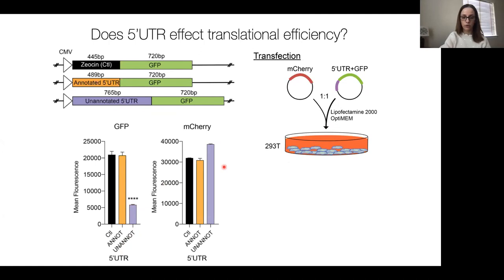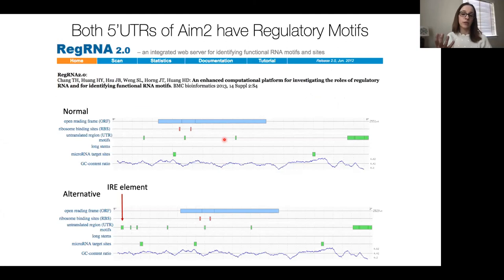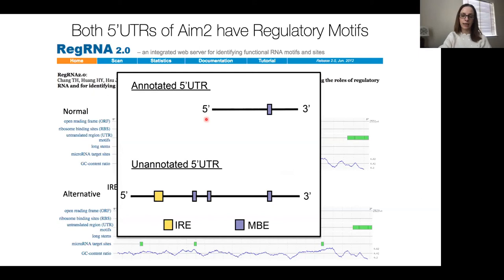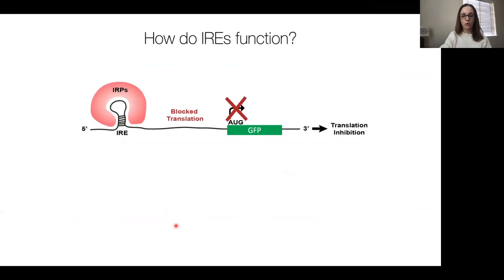Then we looked at what is different between these 5' UTRs. Is there a motif that might hint at regulation for this 5' UTR? Taking a look at the database REG 2.0, we looked at motifs within these UTRs. Comparing the annotated to the unannotated, they share some M6A elements. But one thing distinct in our unannotated UTR was this IRE element, which stands for an iron response element. We wanted to know: is the iron response element something interesting in terms of regulating this protein?